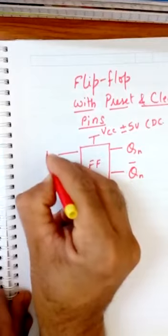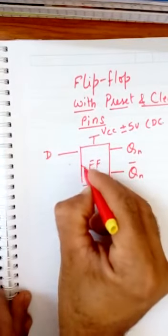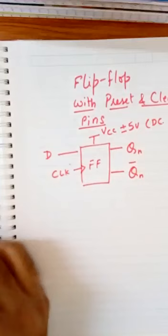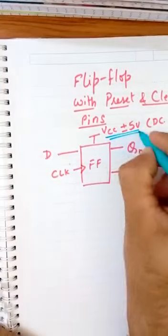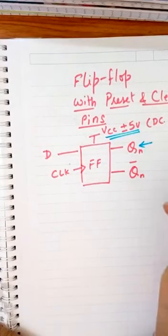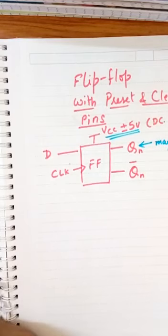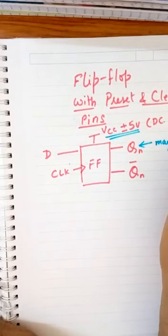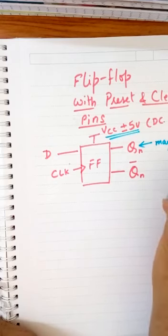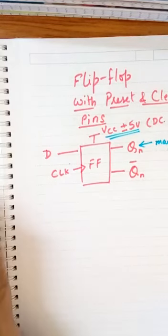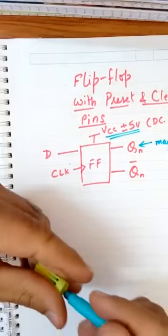If this flip-flop is powered on with the required power supply, then QN may either go to 1 or 0, because there may be a possibility that the output either has a final stable state as 1 or as 0. This means it is undeterministic - we cannot predict what output we will get when we switch on the power.